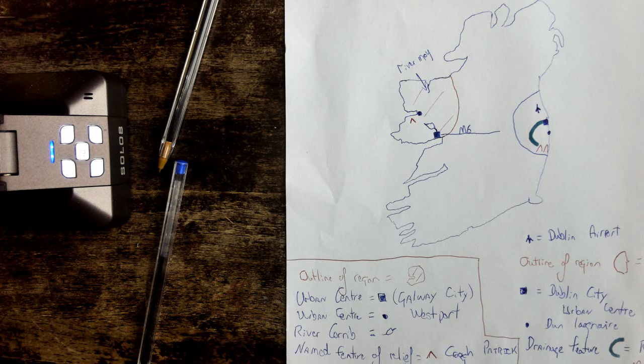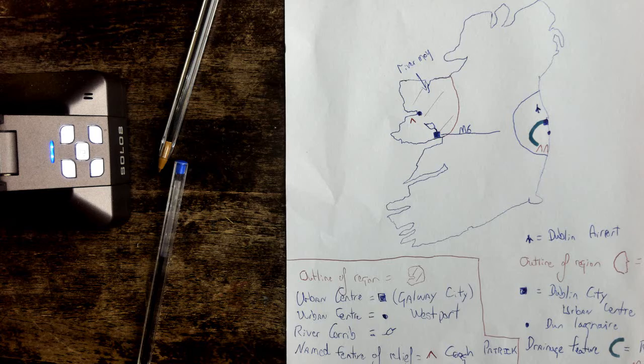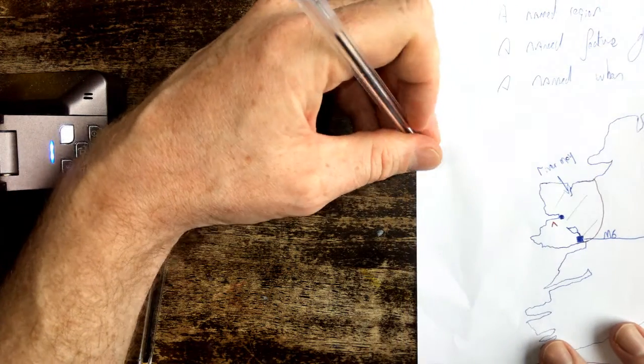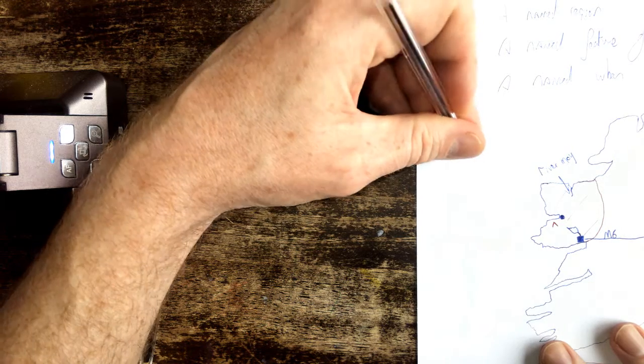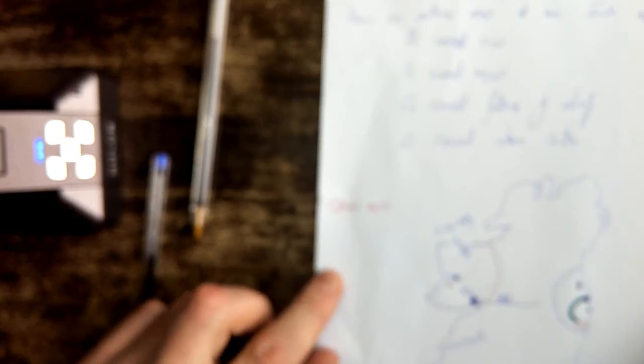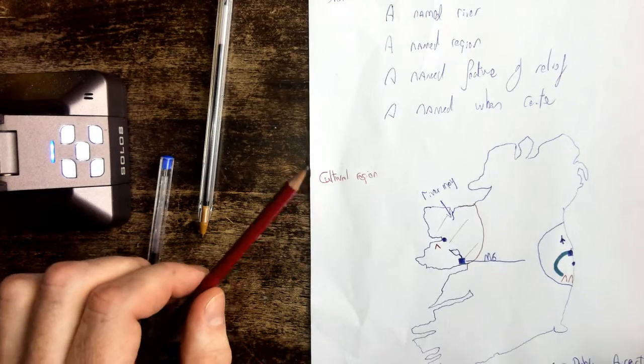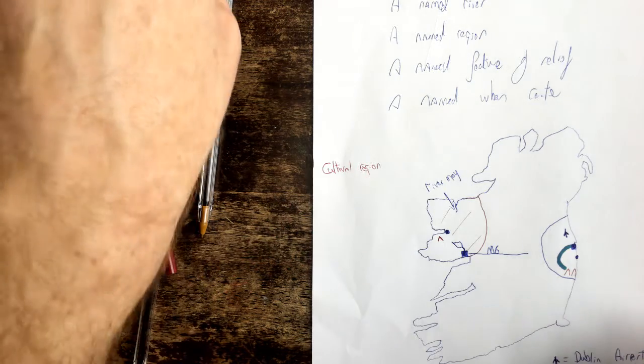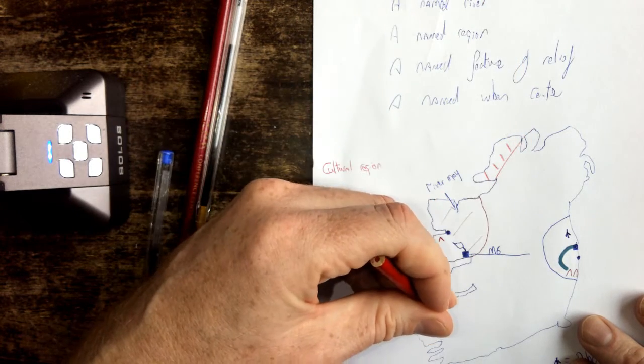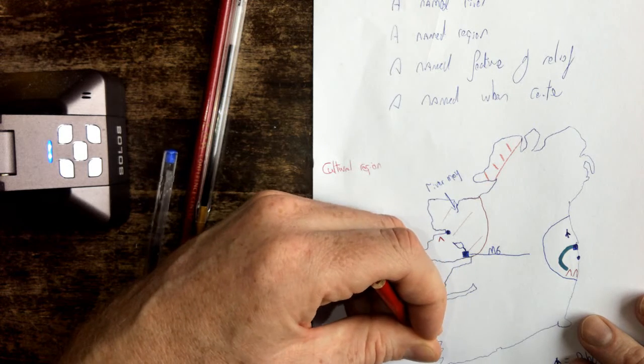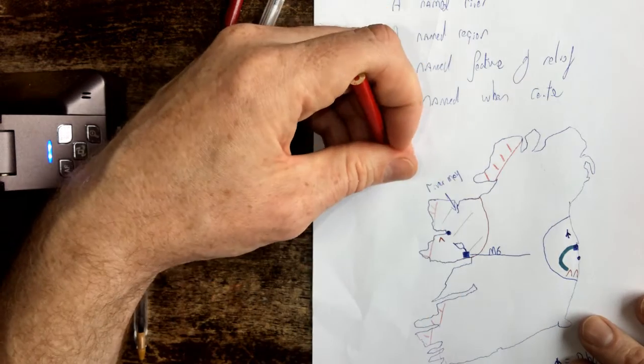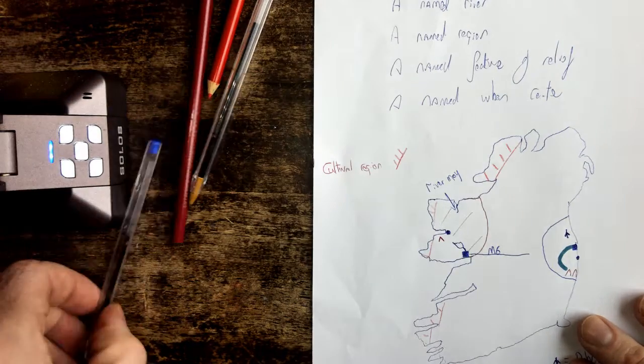Other things they could ask you about the map, the only other parts that come up is to name cultural regions. So if I was asked to put in cultural regions on my map, I might be asked to put in cultural regions. And what I would do there is I would draw just on the edges of Cork, possibly Kerry, Galway, and Mayo. I will call that Gaeltacht.